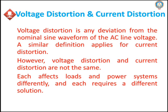Define Voltage Distortion and Current Distortion. Voltage distortion is any deviation from the nominal sine wave of the AC voltage. A similar definition applies for current distortion, but voltage distortion and current distortion are not the same. The effects on load and power systems due to voltage and current distortion are resolved in different manners.